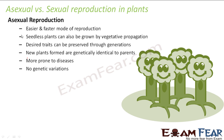First, asexual reproduction is an easier and faster mode of reproduction. Seedless plants can also be grown by vegetative propagation — for example, rose, which does not give seeds. Since sexual reproduction involves seed formation, plants without seeds cannot reproduce sexually, so they can be grown by asexual mode. Also, desired traits can be preserved through generations because in asexual reproduction the new plant formed will be exactly identical to the parent, so the same desired characteristics are guaranteed.